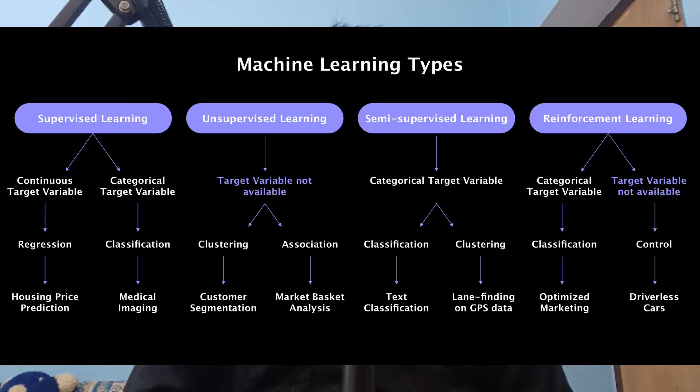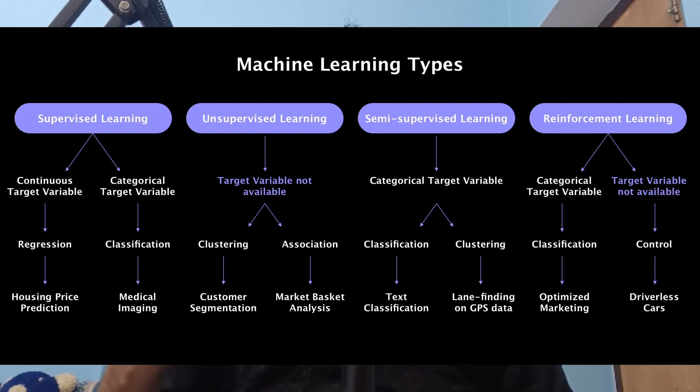There are four types of Machine Learning algorithms: Supervised Learning, Unsupervised Learning, Semi-supervised Learning, and Reinforcement Learning. Click on these videos to know about them.